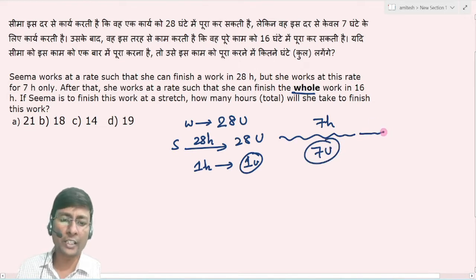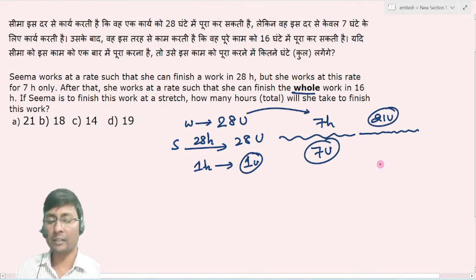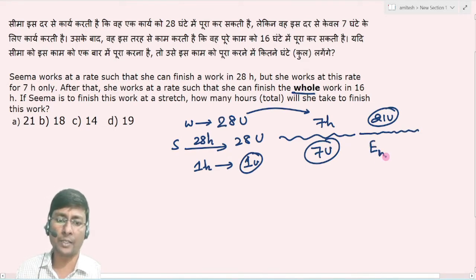तो remaining work done कितना होगा? Remaining work done होगा simply 28 minus 7 का difference. तो that implies 21 unit. लेकिन यहाँ पे इसकी efficiency change हो गई है. वो अपनी new efficiency के साथ काम करेगी.